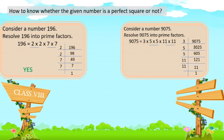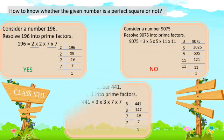Since 3 is a single, unpaired factor, the given number 9075 is not a perfect square. Let's take another example.